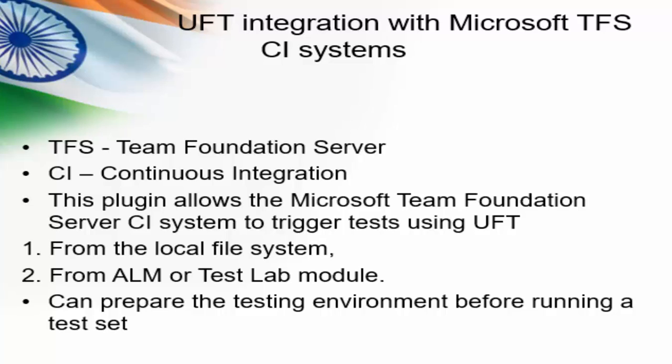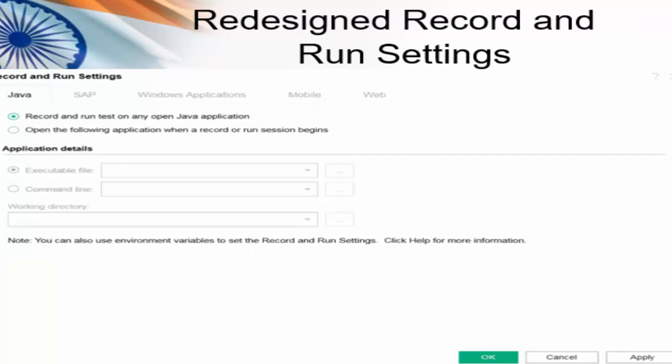After each updated build and deployment, we have to execute our automation test scripts. Using this add-in, we can trigger the test scripts either locally or from ALM. Mostly in many DevOps projects, continuous testing is done either with the help of Selenium or UFT. It can also be used to prepare the testing environment before running the test sets. The present version has been redesigned for record and run setting dialog boxes, made easier with a new configuration setting.